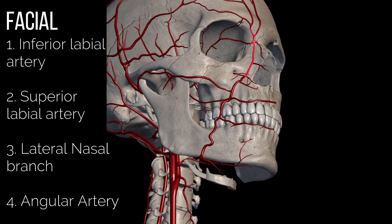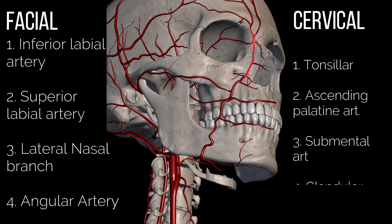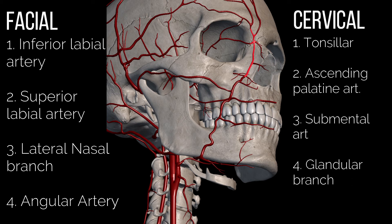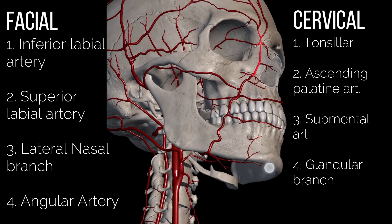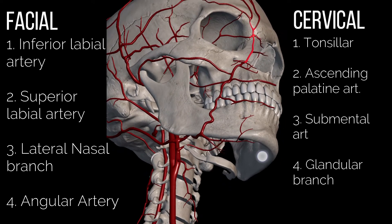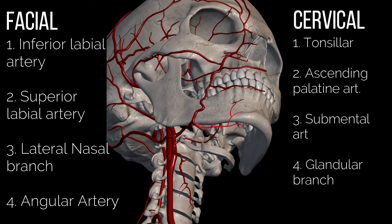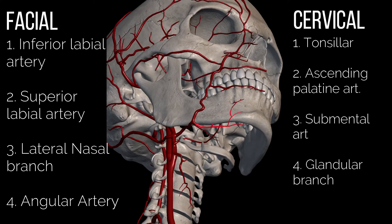The cervical branches can be divided into: number one, the tonsillar branch; number two, the ascending palatine artery; number three, the submental artery; and number four, the glandular branch.